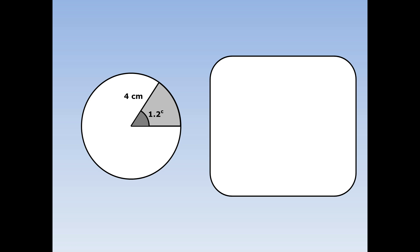Find the area of the sector with radius r equals 4 and angle theta equals 1.2 radians. Write down the formula: area equals half r squared theta, where r is equal to 4 and the angle is equal to 1.2 radians. The area of the sector is 9.6 centimeters squared.